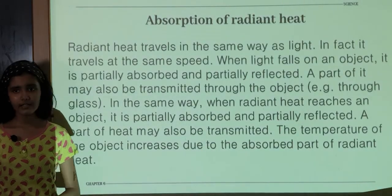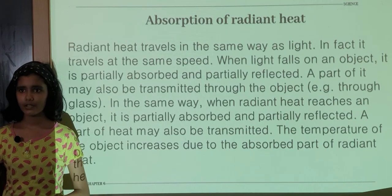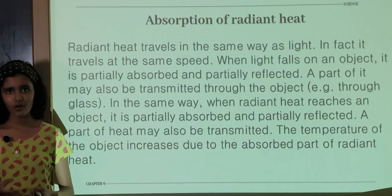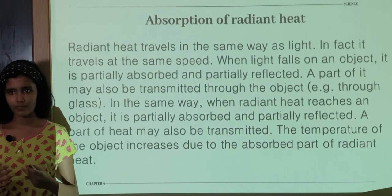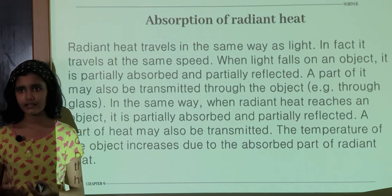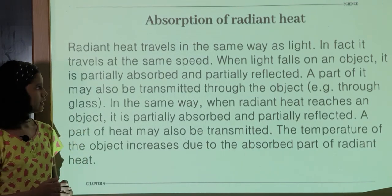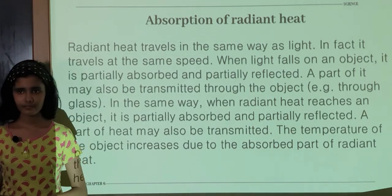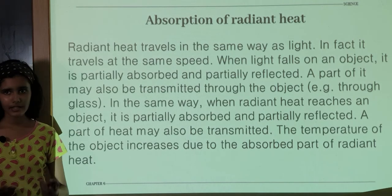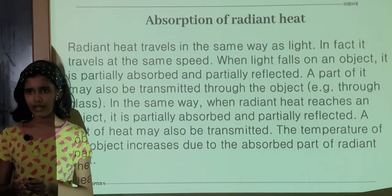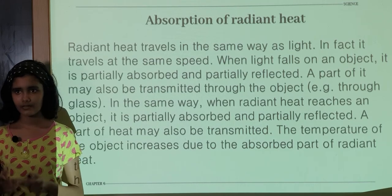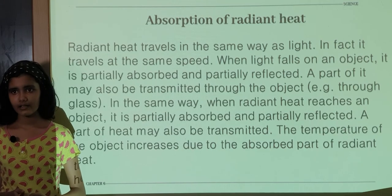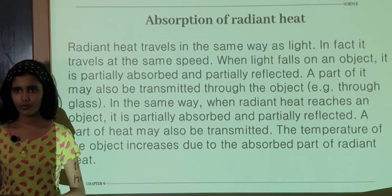Absorption of Radiant Heat. Radiant heat travels in the same way and at the same speed as light. When light falls on an object, some of the light is absorbed, some is reflected, and some is transmitted through the object — for example, glass. Similarly, when radiant heat reaches an object, some is absorbed, some is reflected, and some is transmitted. Since some heat is absorbed, the object gains more heat.